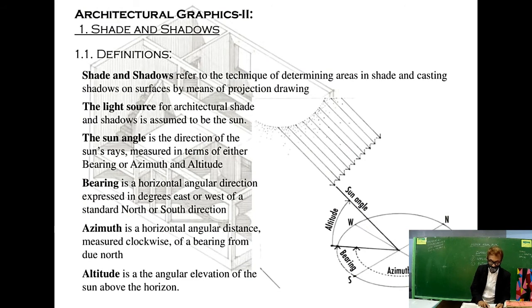So what is Architectural Graphics? Our subject matter is all about shade and shadows. We are focusing more on the effect of light on an object, on how light casts shadows on an object and what form it defines. Shade and shadows refer to the technique of determining areas in shade and casting shadows on surfaces by means of projection drawing.